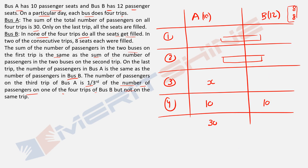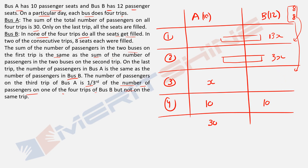Now we use the 8, 8 block. If 8, 8 goes to Bus B Trips 1 and 2, then one of them must be 3X — but 8 is not a multiple of 3, so that's impossible. Therefore, 8, 8 must go to Bus B Trips 2 and 3, and 3X must be in Trip 1. So Bus B Trip 2 = 8, Bus B Trip 3 = 8, and Bus B Trip 1 = 3X.